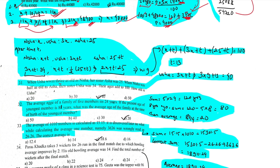When Usa was thrice as old as Nisha, her sister Asha was 25. This is a three-variable problem. Usa will be thrice as old as Nisha, and Asha was 25. We process this information one statement at a time.